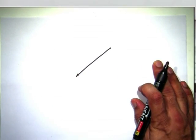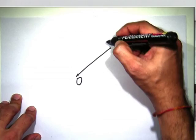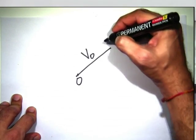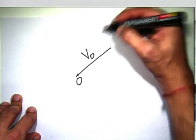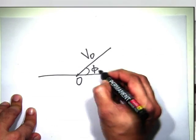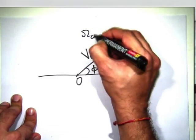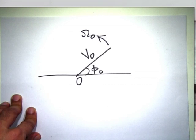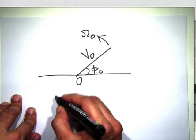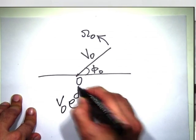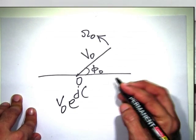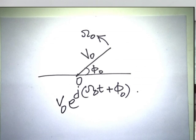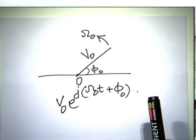We are going to use rotating complex numbers. If you have a complex number with magnitude v₀ and initial angle φ₀ rotating at angular velocity ω₀ counter-clockwise, its projection on the real axis is a cosinusoid. This complex number is described as v₀·e^(j(ω₀t + φ₀)). The real part is the original cosine wave. We are going to work with this complex exponential instead of the original sine wave.